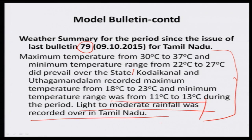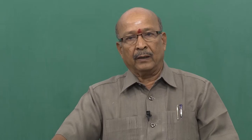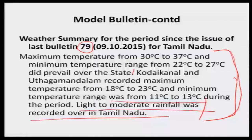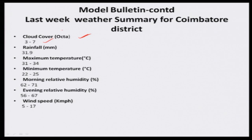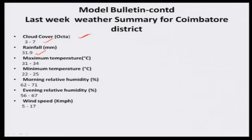Earlier I was saying that you prepare the summary of the past weather week. First you give it for your state, then for the location. What was the cloud cover? 3 to 7 okta — we have studied 0 to 8, where 8 means the entire sky is covered. Rainfall was 31.9 millimeters. As per the thumb rule, when rainfall is more than 25 millimeters, we suggested going for sowing under dryland and skipping irrigation. Rainfall is 31.9 mm — so see how these are interlinked.